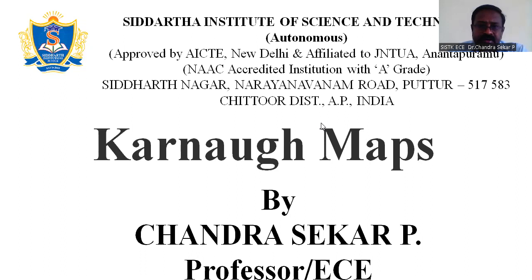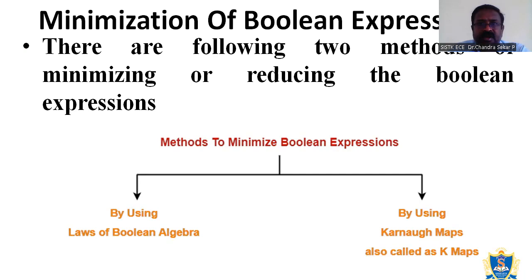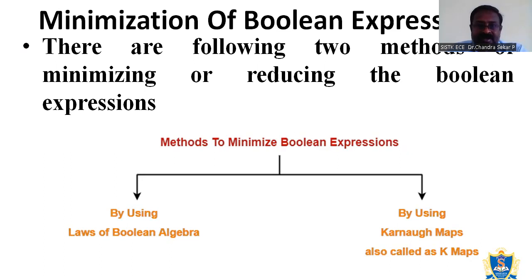Hi. Today we are going to discuss about the Karnaugh Map, or K-Map. Basically, the minimization of the Boolean expression. There are two methods for minimizing the Boolean expression. The minimization may also be called the reduction of the Boolean expression. The first method is by using Boolean algebra — that is, the laws of Boolean algebra. The another method is by using the K-Map method.